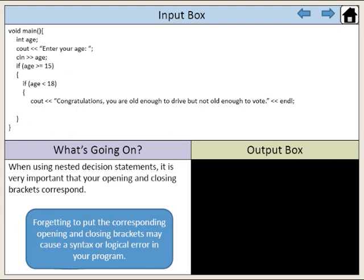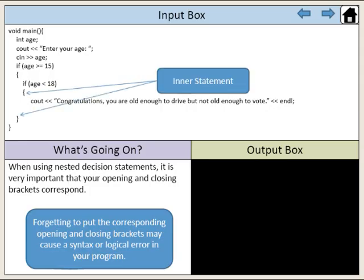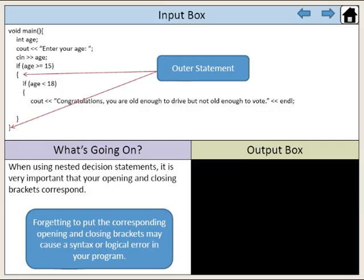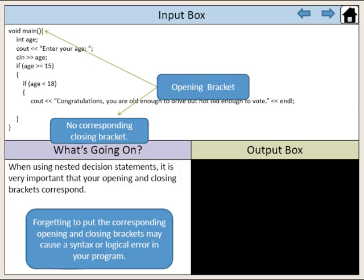Forgetting to put the corresponding opening and closing brackets may cause a syntax or logical error in your program. Here, the programmer has forgotten to place the closing bracket at the end of the nested decision statement. So, the compiler automatically uses the closing bracket of the outer decision statement. The outer decision statement will use the closing bracket of the main function. This leaves the main function without a corresponding closing bracket and will result in a syntax error.